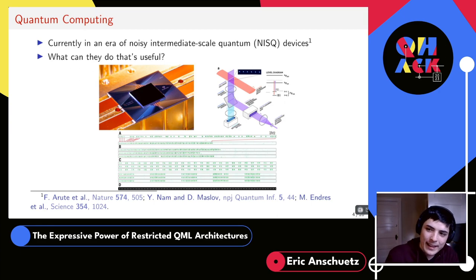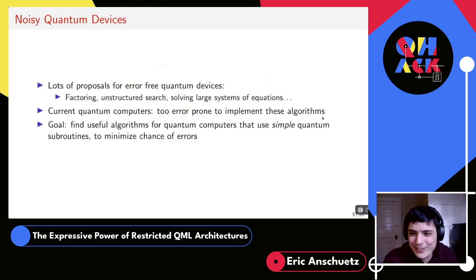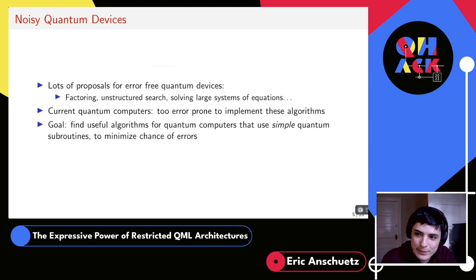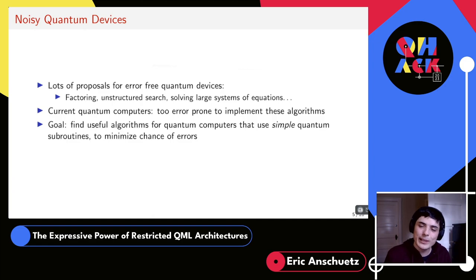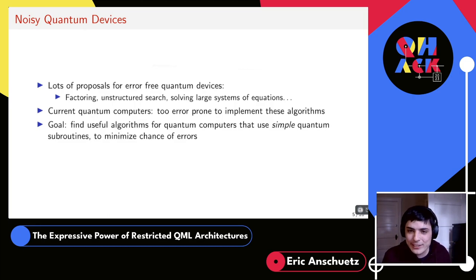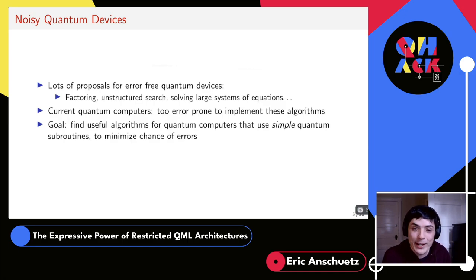In the far future, with large error-corrected quantum devices, we'll be able to factor large numbers, do unstructured search efficiently, and solve large systems of equations. But these proposals really need large-scale quantum devices, which we don't have right now. So ironically, what we're trying to do with noisy quantum devices is find use cases that use them as little as possible — minimizing quantum resources while still doing something interesting.